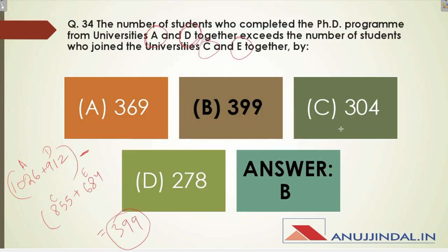Question 34 asks: the number of students who completed the PhD program from universities A and D together exceeds the number of students who joined universities C and E together by how much? You put in the values: students who completed from A is 1026, from D is 912, those who joined C is 855 students and E is 684 students. Subtracting gives you 399.